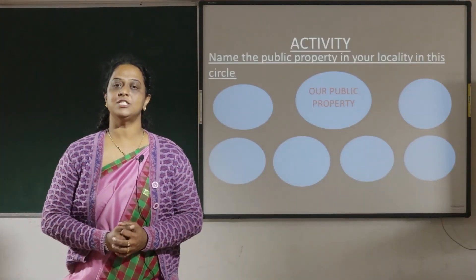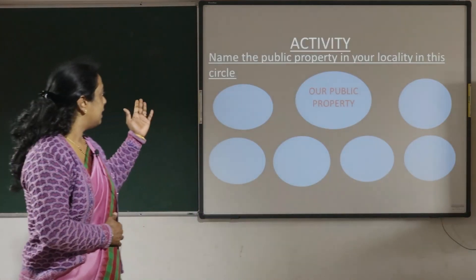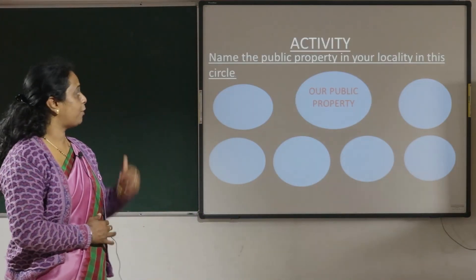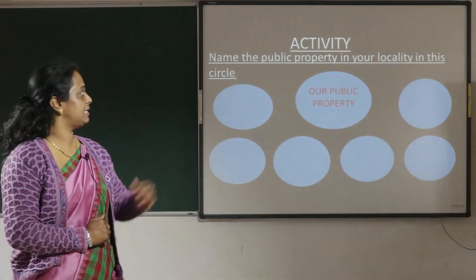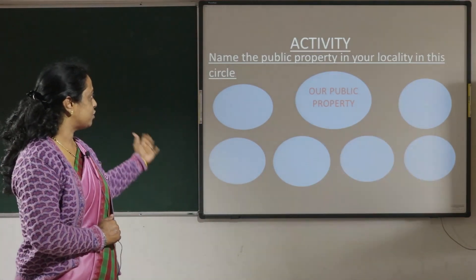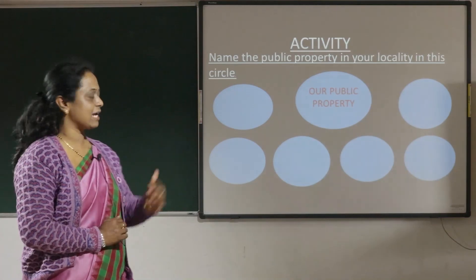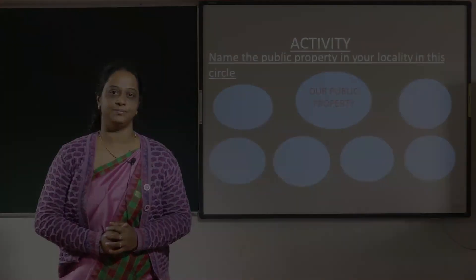There is an activity for you, children. Name the public property in your locality in this circle. You have to do this as an activity, children. Thank you.